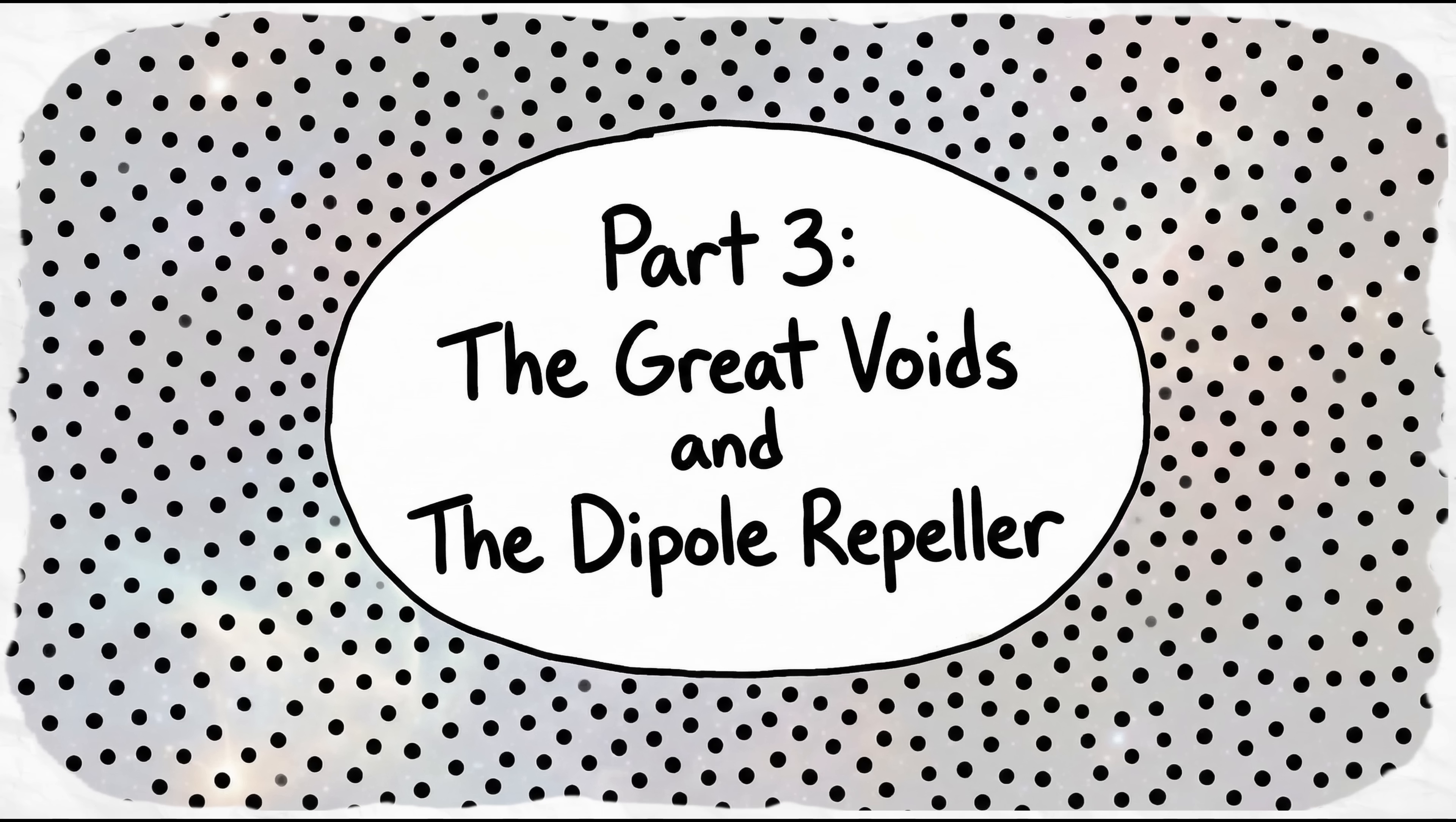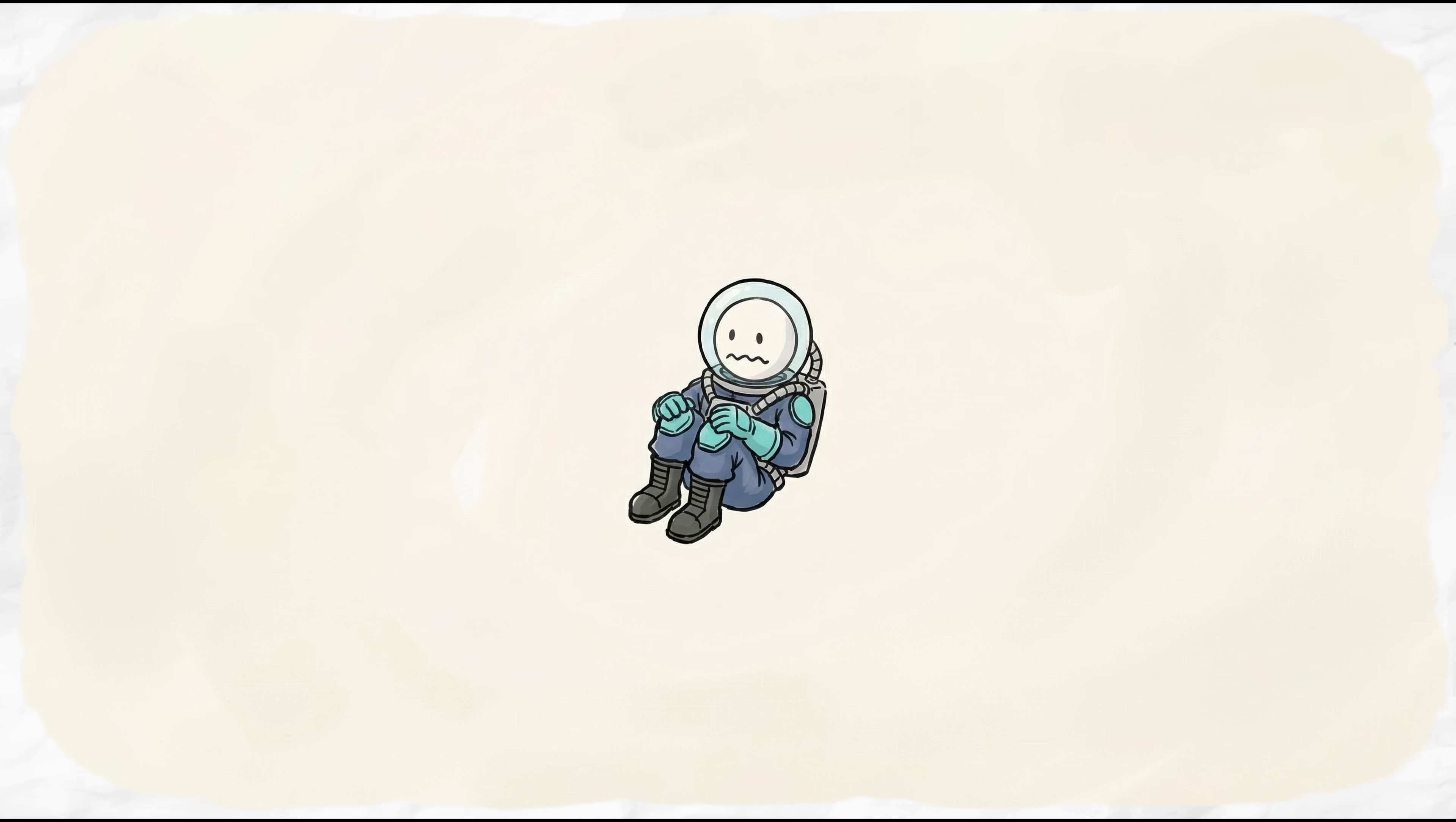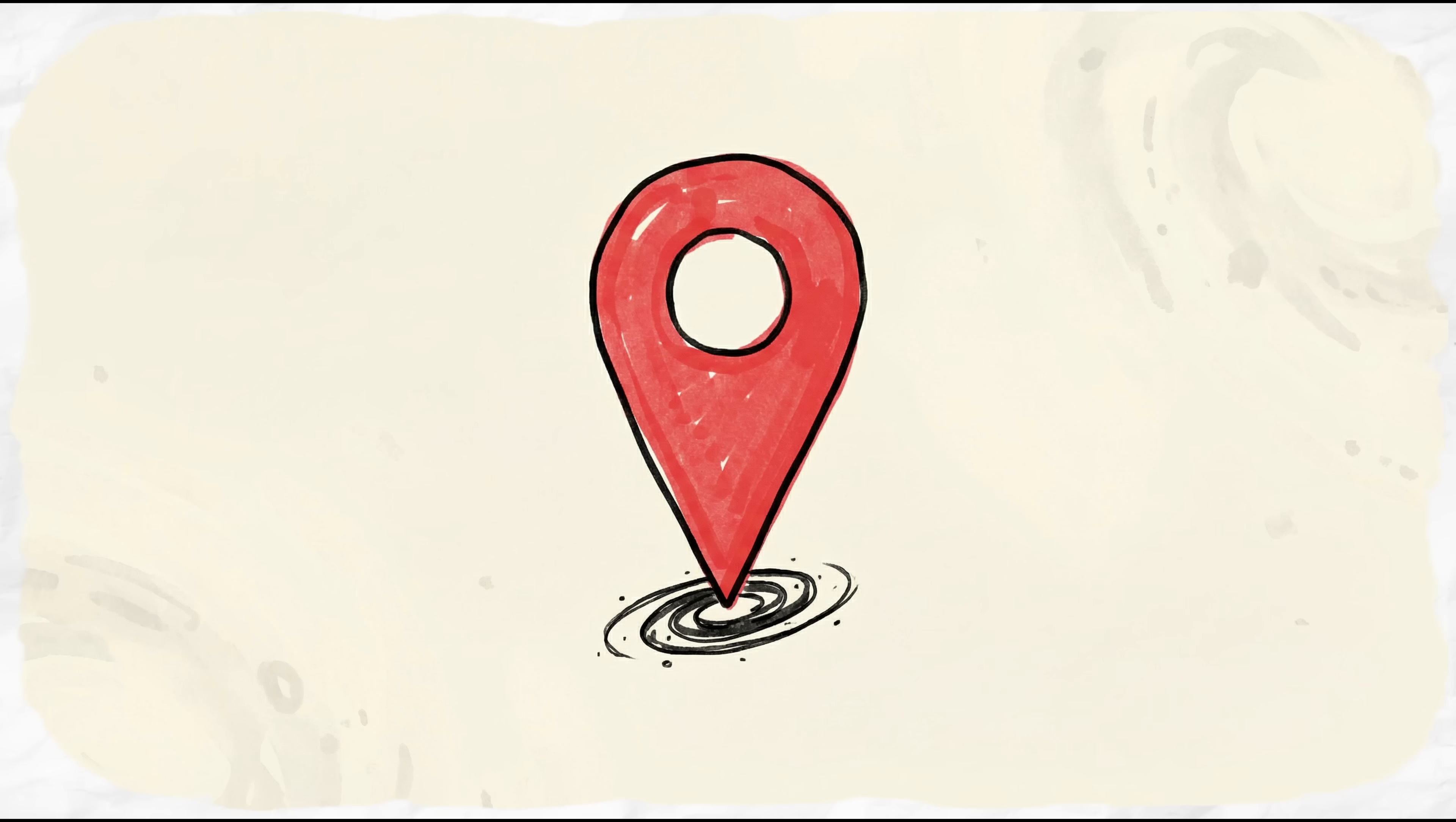Part 3. The Great Voids and the Dipole Repeller. If these walls are too much matter, the next weird thing is the horror of not enough. The KBC void is a huge empty pocket spanning 2 billion light-years, and we are sitting right in the middle of it.